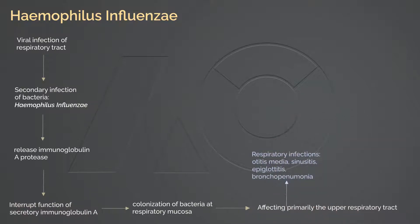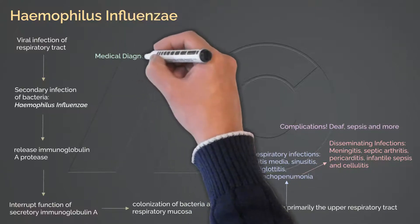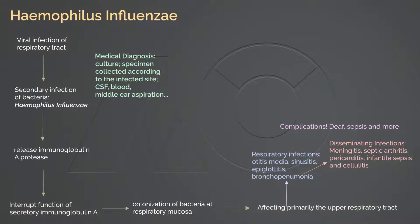Haemophilus Influenzae infections are clinically significant because the bacteria are severely invasive and can cause serious complications. Depending on the type of infection, complications vary. For example, recurrent and chronic otitis media can lead to death. Medical diagnosis depends on the presence of the bacteria in culture. Specimens are collected from where the infection is: blood culture for sepsis, CSF culture for meningitis, throat swab for upper respiratory infection, and middle ear aspiration for otitis media. Drug sensitivity testing is also required because some strains have drug resistance.